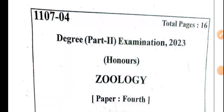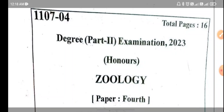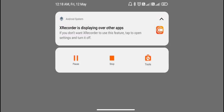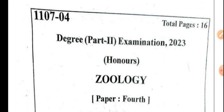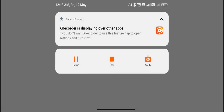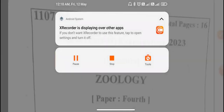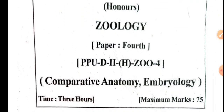We're going to discuss the degree Part 2 question paper of Paper 4 that was held yesterday. It is now 12:18 a.m. of the next day, that is 12th May, and the exam was held on 11th May. Sorry for the late upload — I was busy studying and revising things, so I got late. It's midnight and I am recording this now, so we will discuss these things.